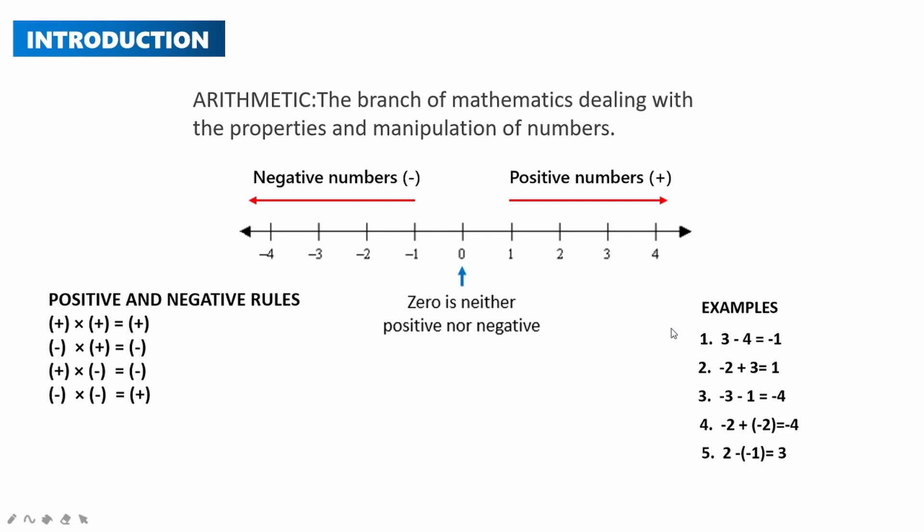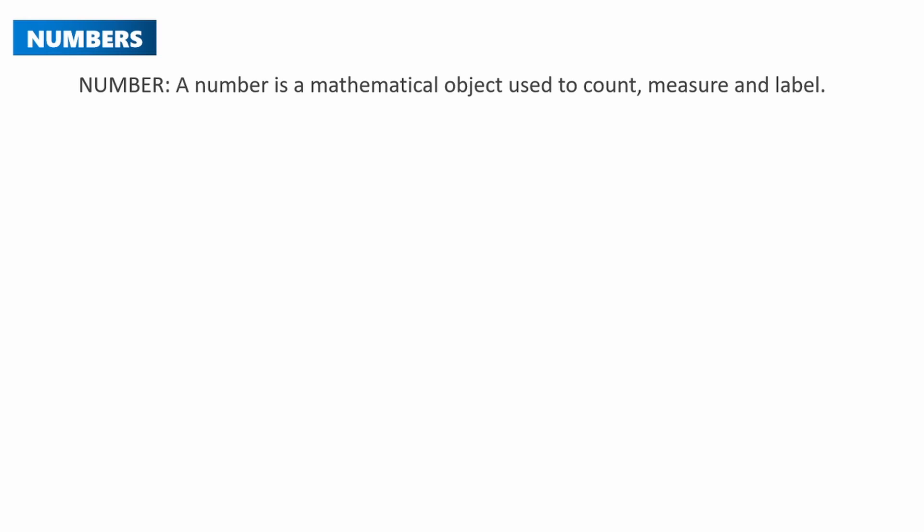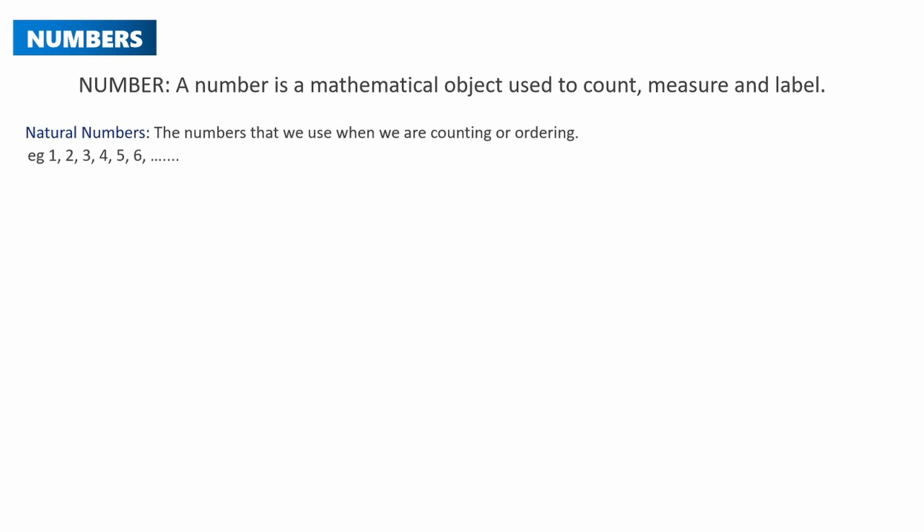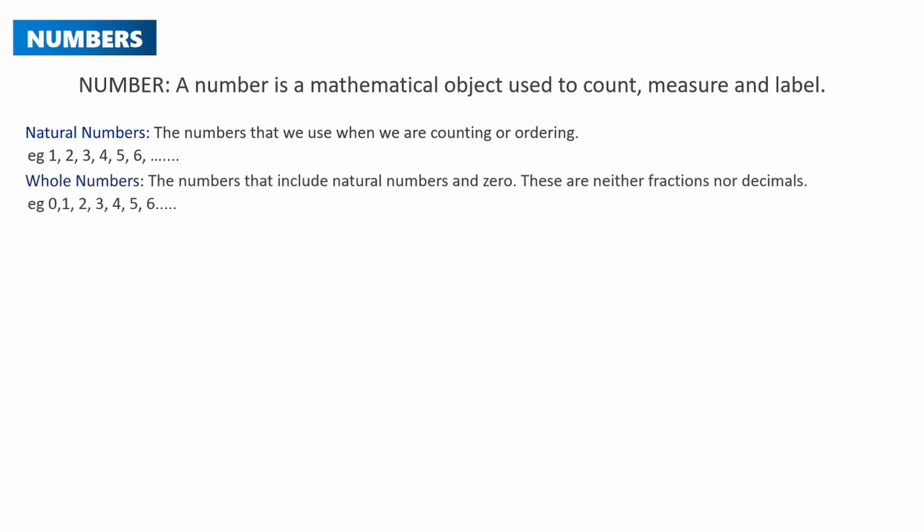A number is a mathematical object used to count, to measure, and to label. There are various types of numbers. Natural numbers are the numbers we use when counting or ordering, e.g. 1, 2, 3, 4, 5, 6 and so on. Whole numbers include natural numbers and zero; they are neither fractions nor decimals, e.g. 0, 1, 2, 3, 4, 5, 6 and so on.